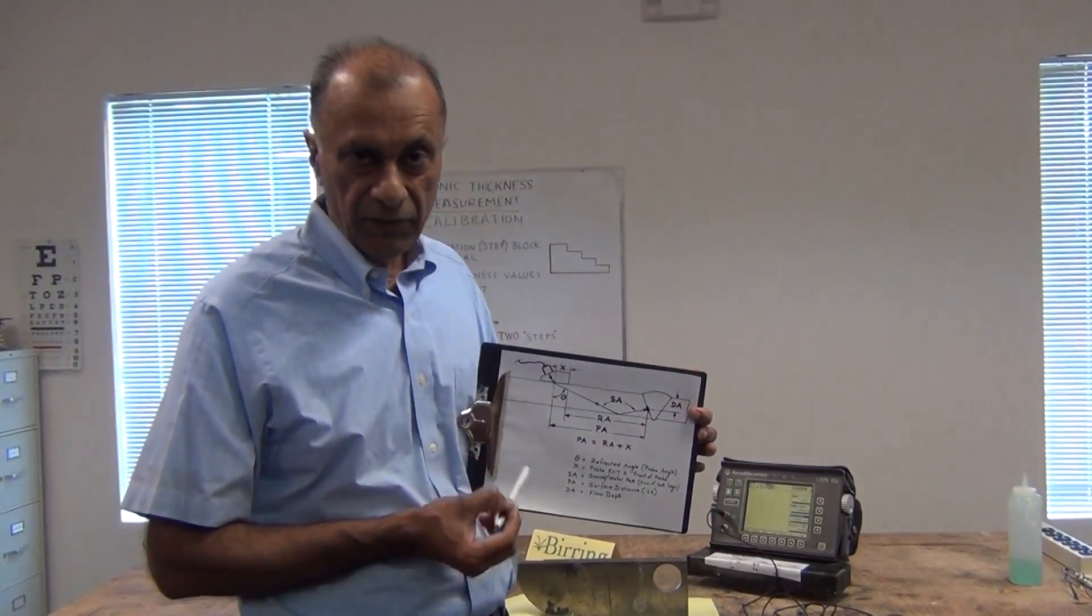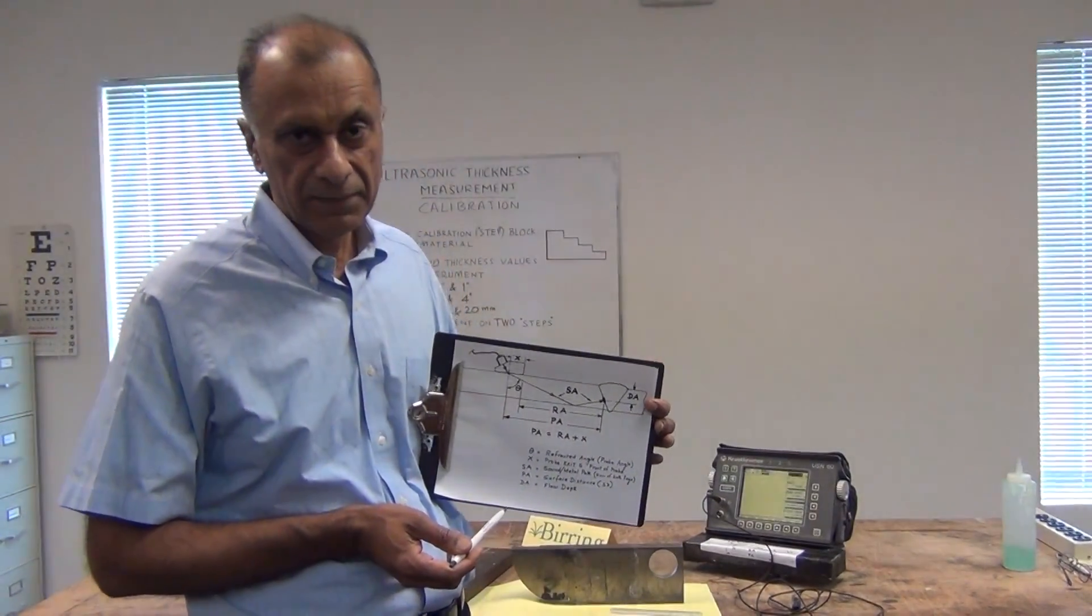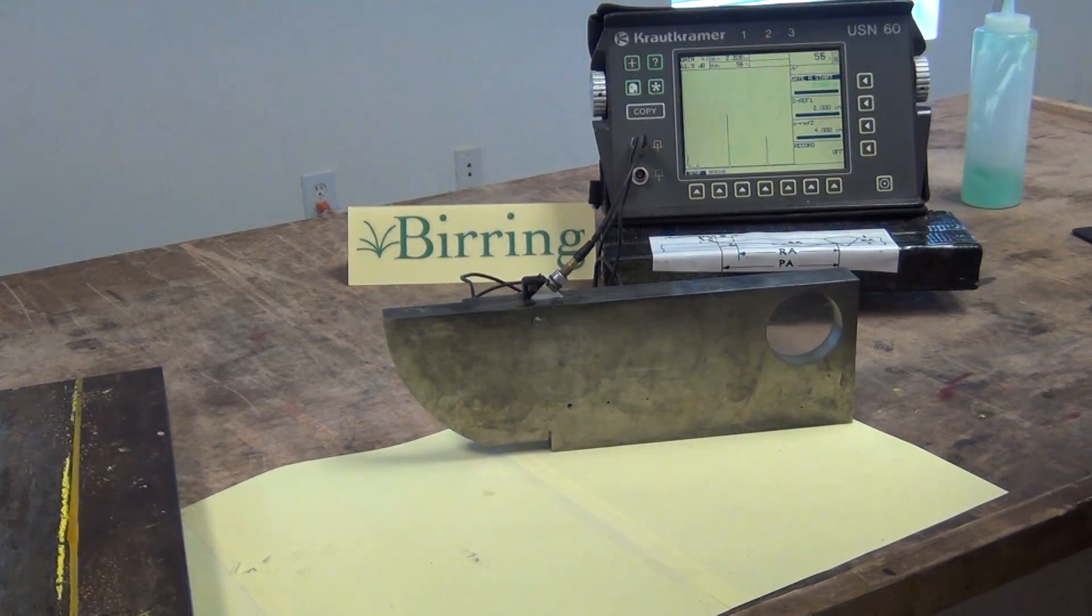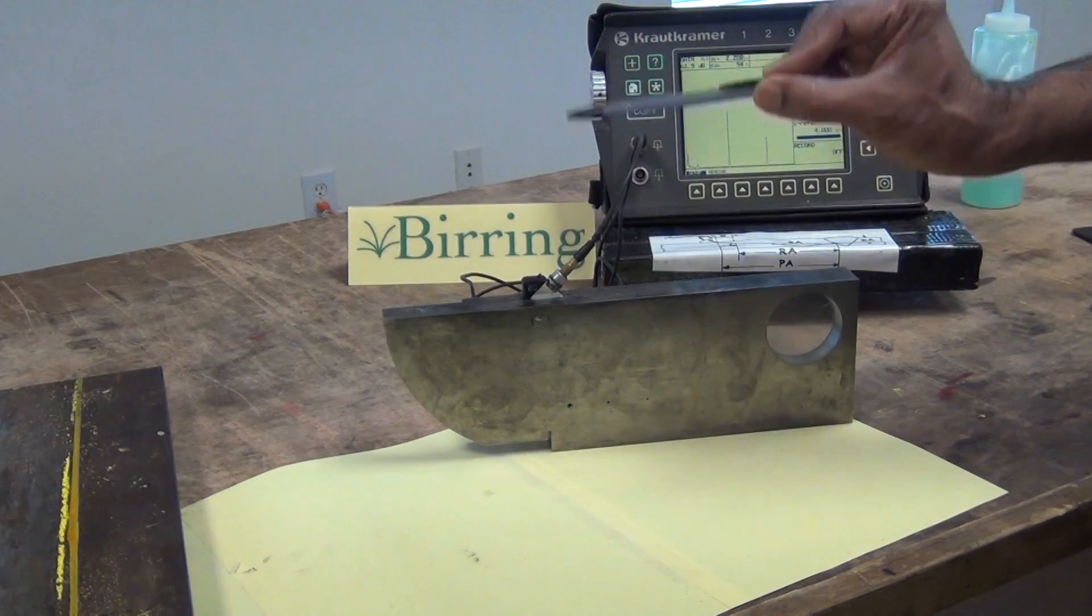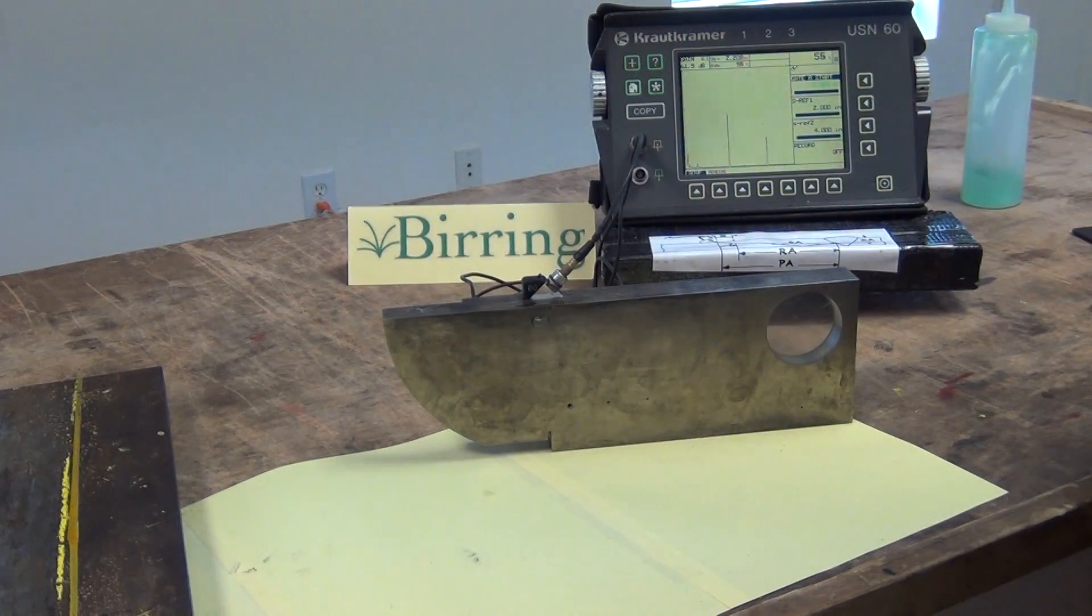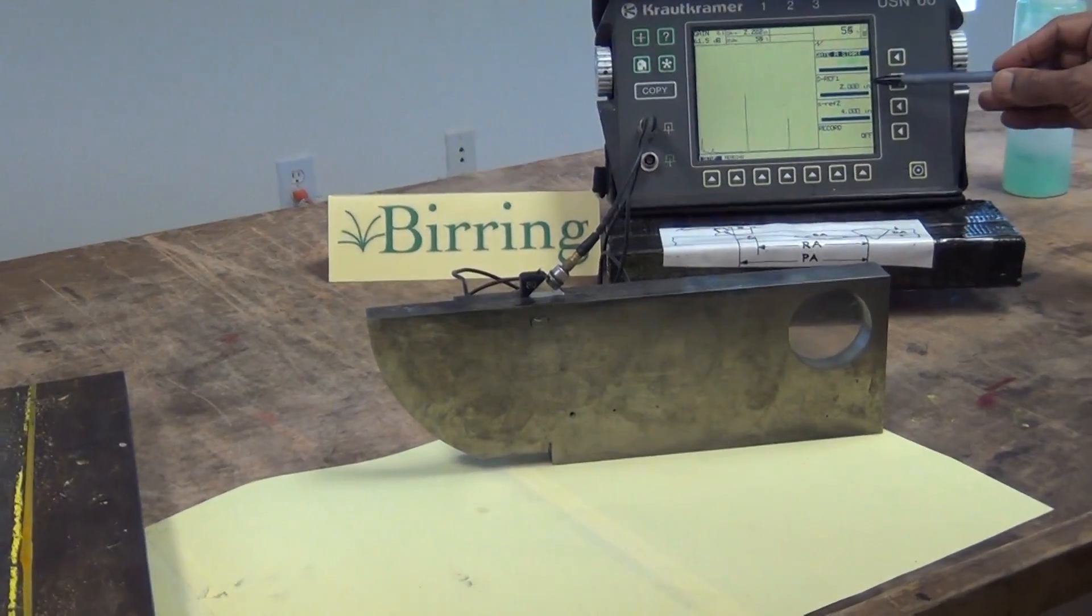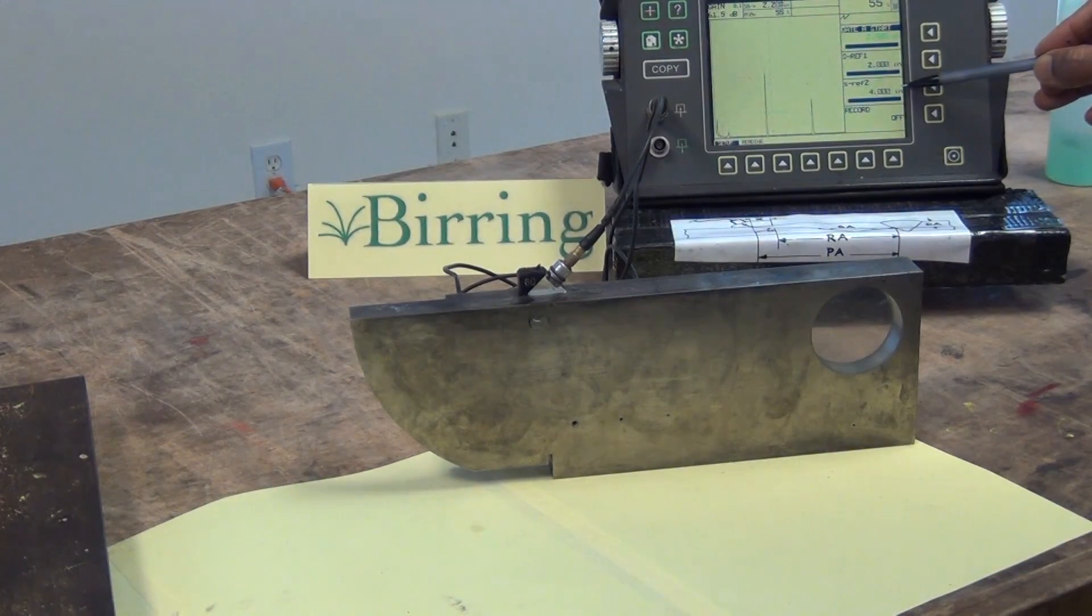And what I will be inspecting first is a one inch plate which has a double V weld. First we will set the range on the machine using AutoCal, and we are using an IAW block with a two inch radius and a four inch radius right here. So we get two signals, one at two inches and one at four inches. So we will do the AutoCal. We set the S reference 1 to 2 inches, S reference 2 to 4 inches.